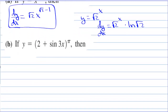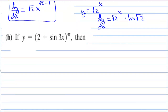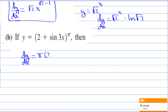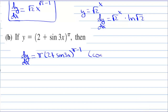If y equals (2 plus sine 3x) to the pi, then dy/dx equals pi times (2 plus sine of 3x) to the pi minus 1, times cosine of 3x, times 3.